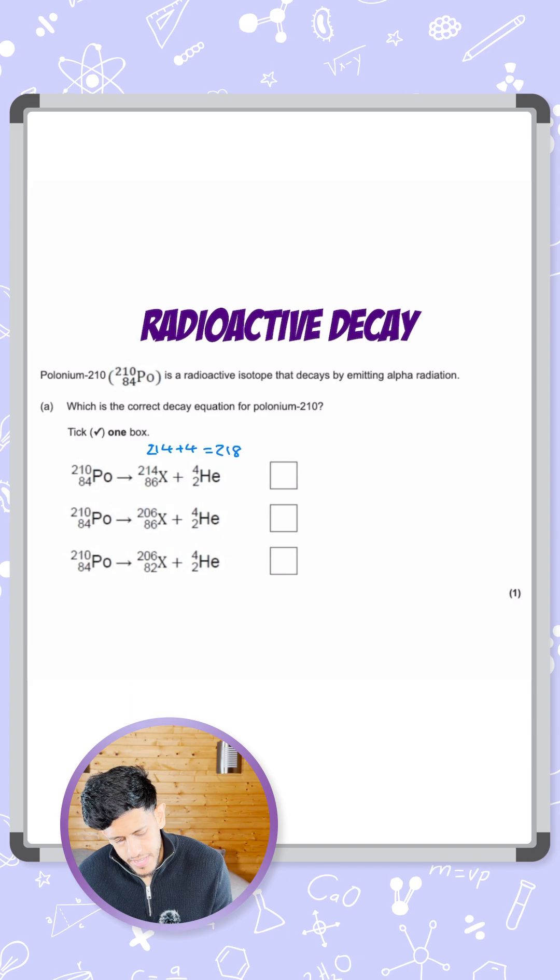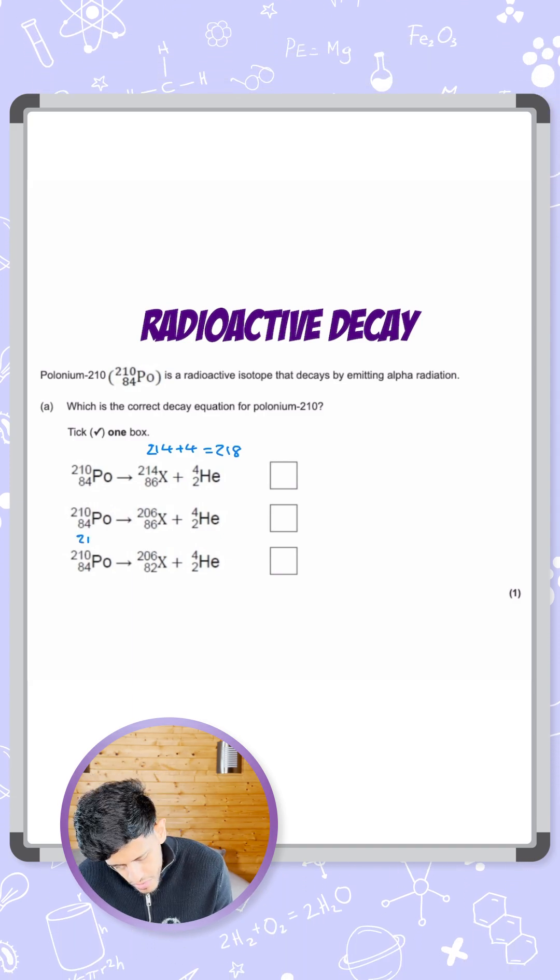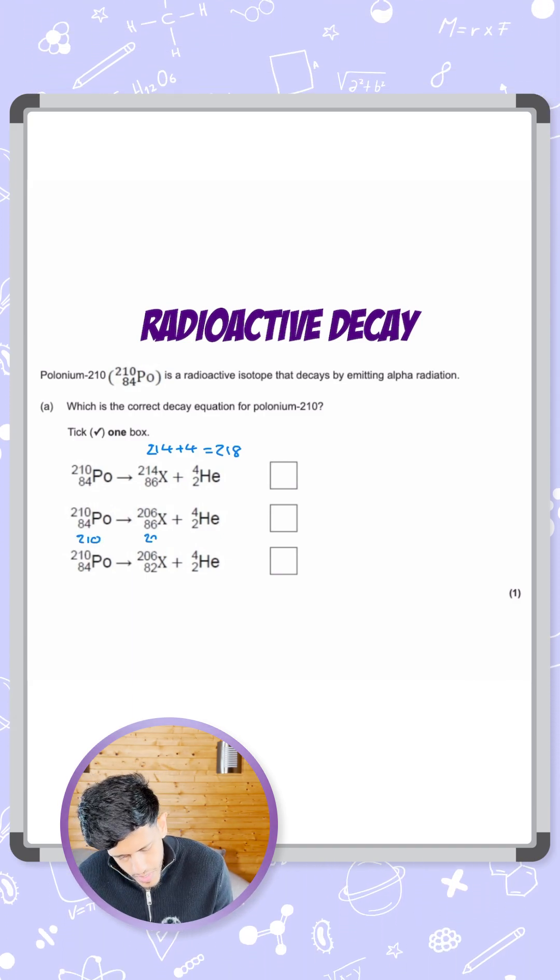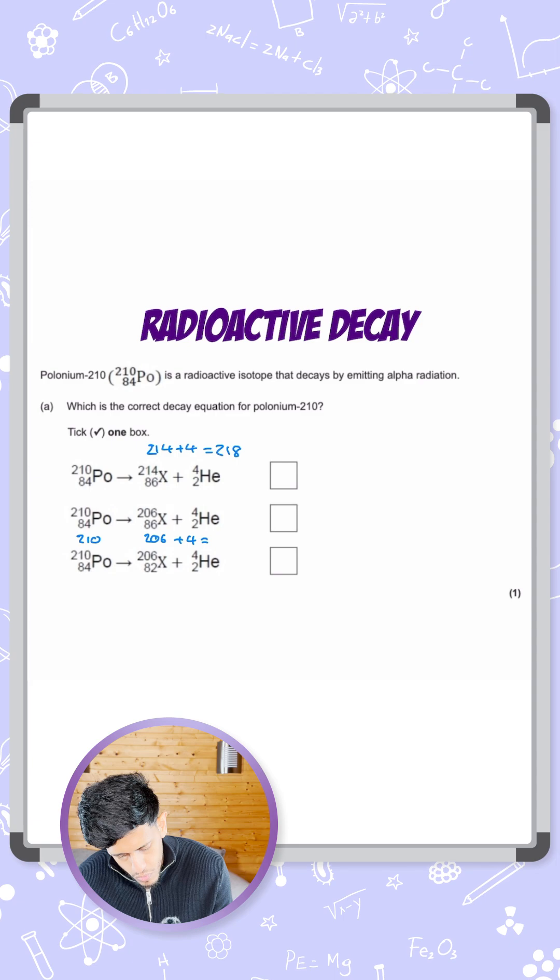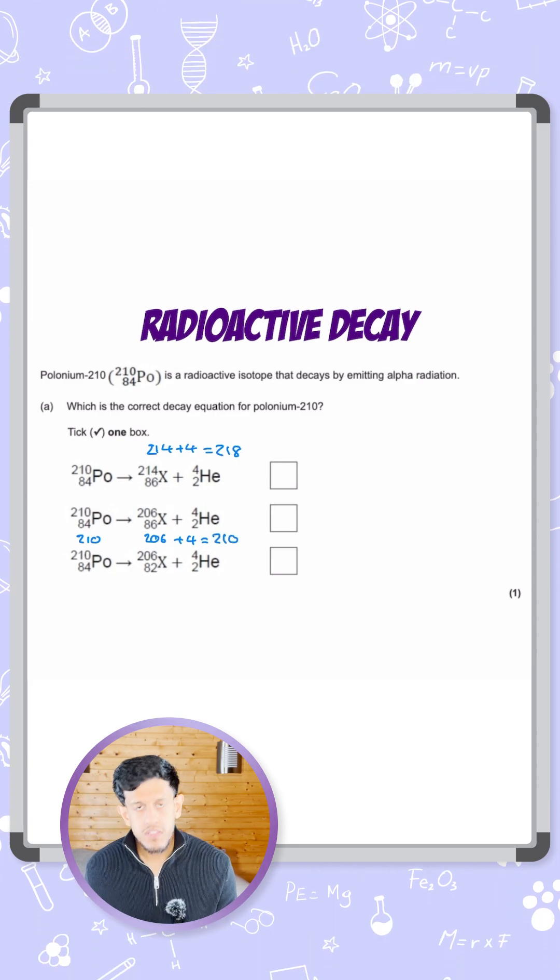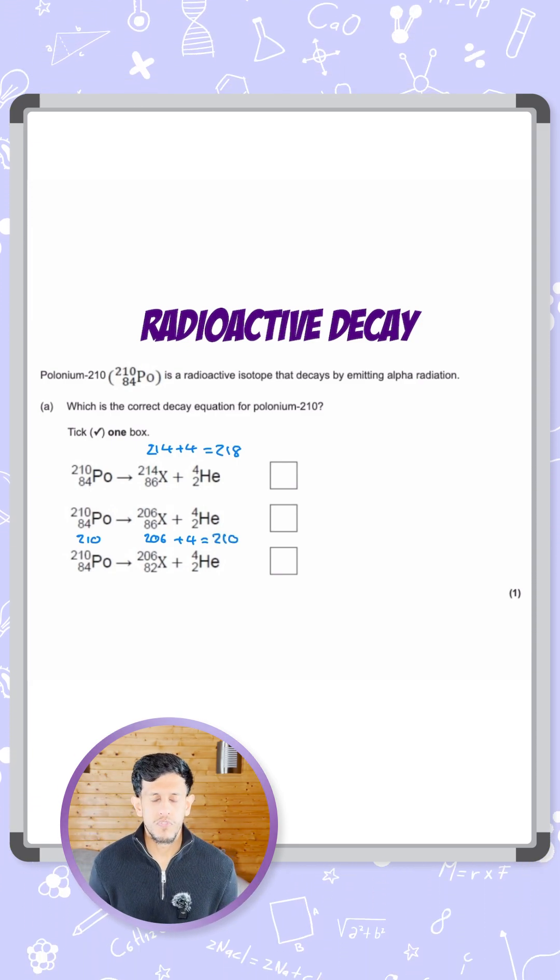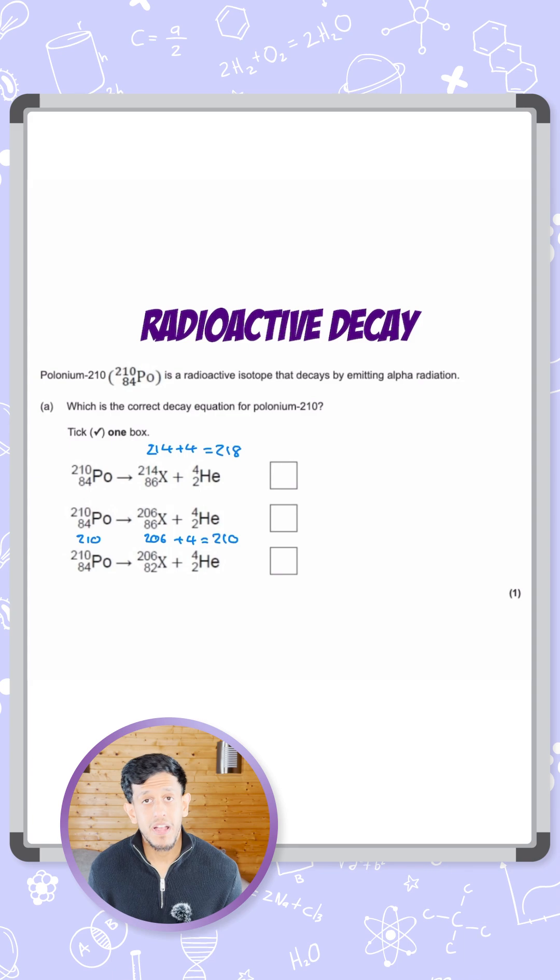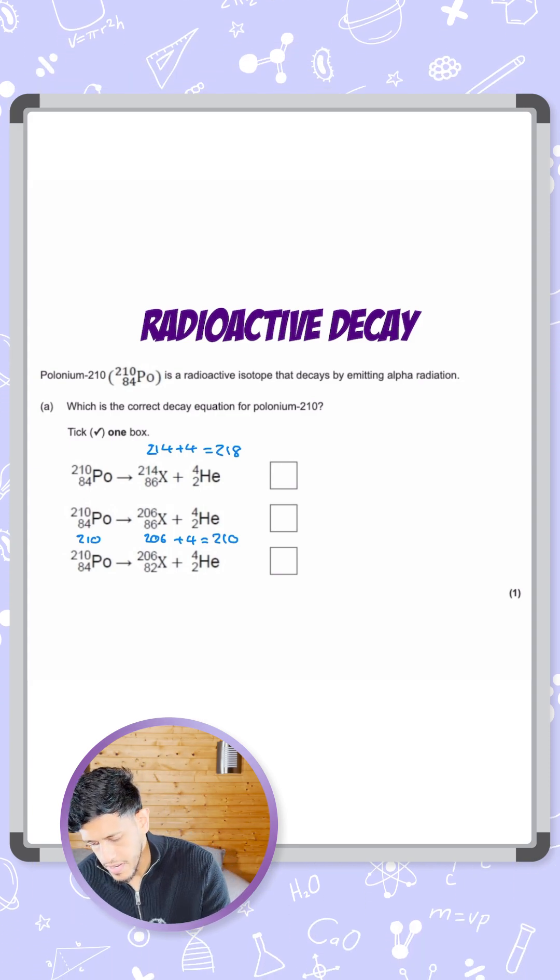Both of the other two, you can see here I'm going to put it in between them—210 on the left, and on the right-hand side we have a mass number of 206 plus 4, which equals 210. So there is a balance in the mass number of both of them. So now we need to check the balance of the atomic number. I'm going to do that in a different color.